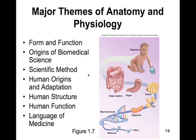Let's begin our semester in Chapter 1. In this chapter, we'll look at some of the major themes of anatomy and physiology. We'll look into form and function, some origins of biomedical science. We'll look into the scientific method, some of the adaptations that humans have made, human structure and function, and then a little bit of an introduction to the language of medicine.